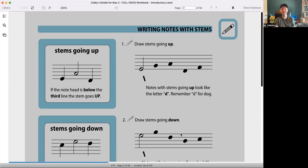All right. Draw stems going up. Just find the right section of the note head and then draw a line going up through three lines or so. And we're good. So stems go up if the note head is below the third line.